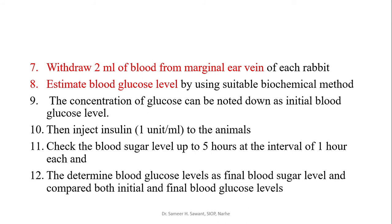Draw 2 ml of a blood sample from the marginal ear vein of the rabbit and estimate the initial blood glucose level using a glucometer. You can also use another suitable biochemical method for blood glucose level estimation. Note the concentration of glucose as the initial blood glucose level.